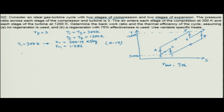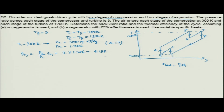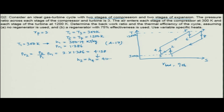Moving to point 2: P_r2 = (P_2/P_1) × P_r1 = 3 × 1.386 = 4.158. From Table A-17, interpolating, H_2 = H_4 = 411.26 kJ/kg, since the temperature remains the same at state 2 and 4 due to the symmetry of the two identical compression stages.